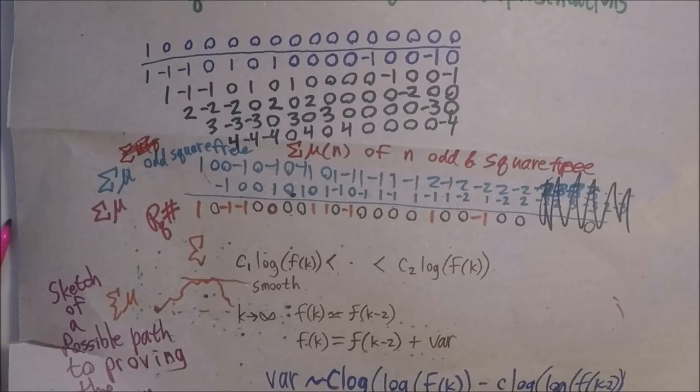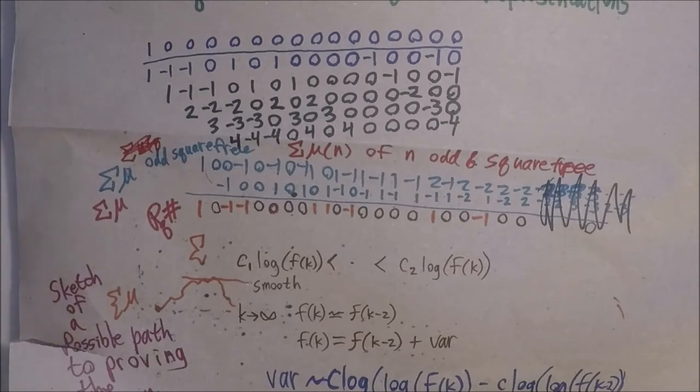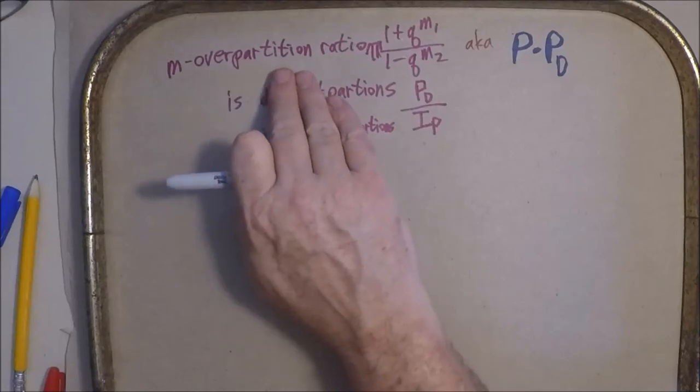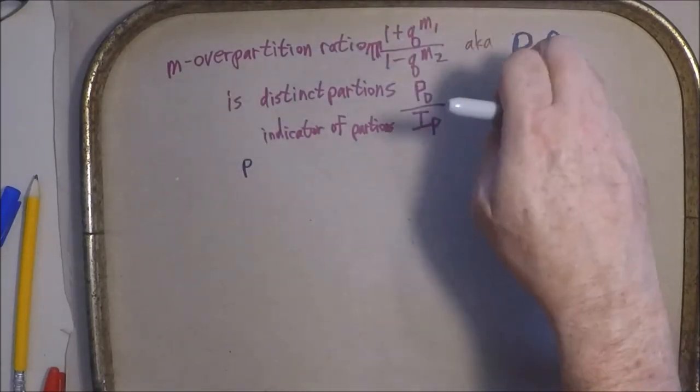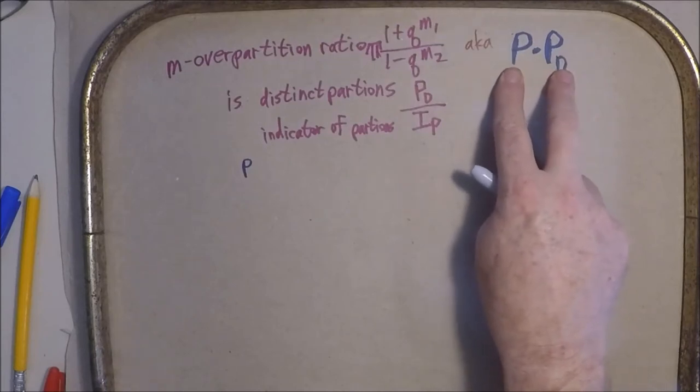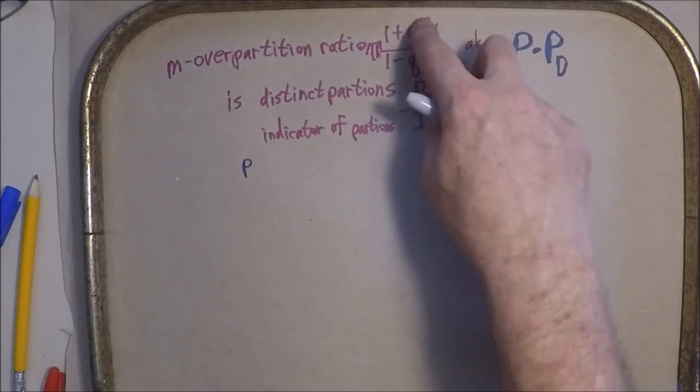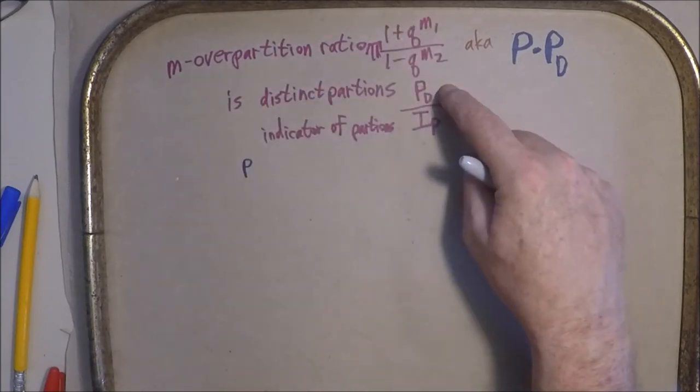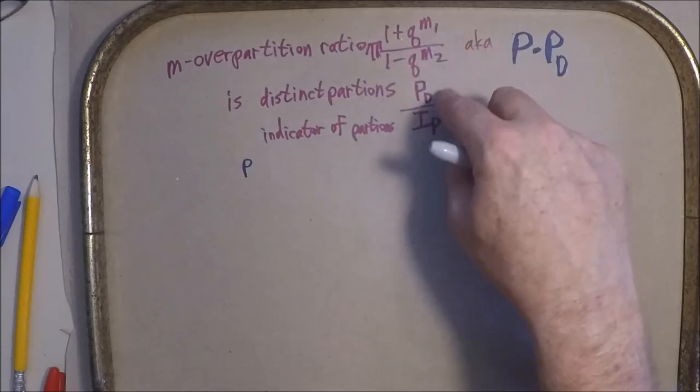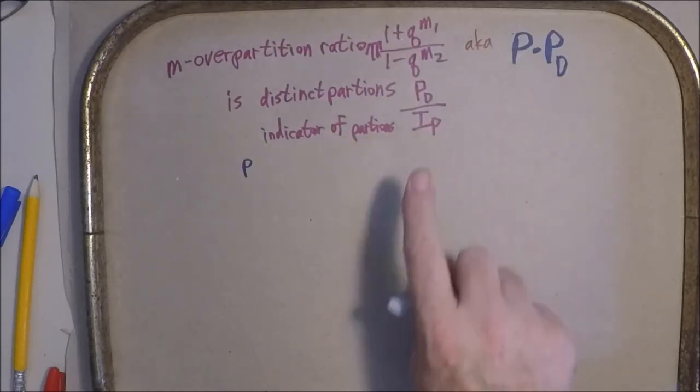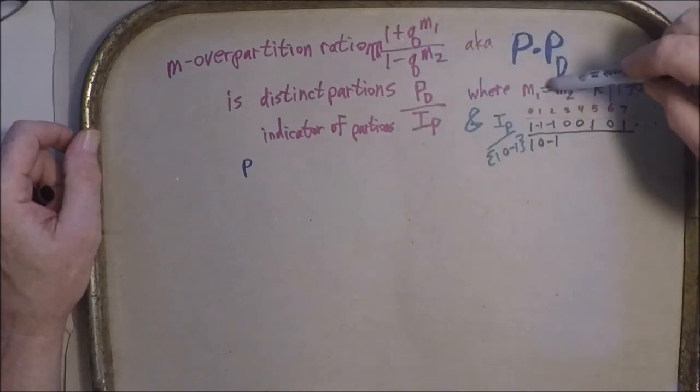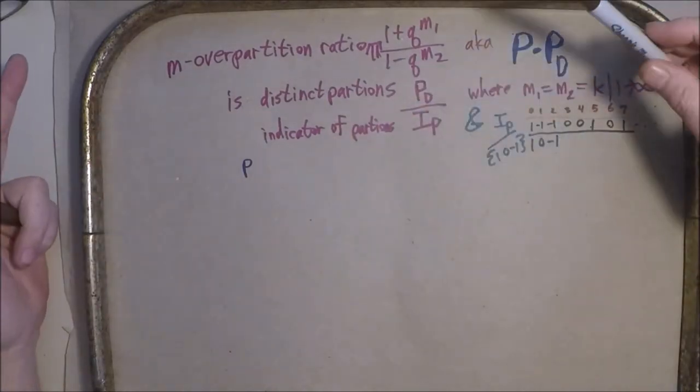So, this as a ratio is, I don't want to say an origin, I think a balancing point is probably the best way to describe it. Let's see if I can describe it with math. Alright, so, thinking in terms of this m over partitions, we can think of it as a ratio of these two, but it's also, I mean, it looks like a product when expressed this way. So, to maintain that ratio form, then it's this, is distinct partitions over the indicator of unrestricted partitions. Where these m1 and m2, in this case, are taking on the values of all natural numbers.